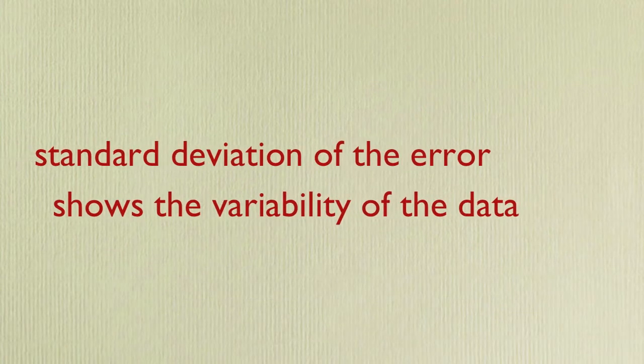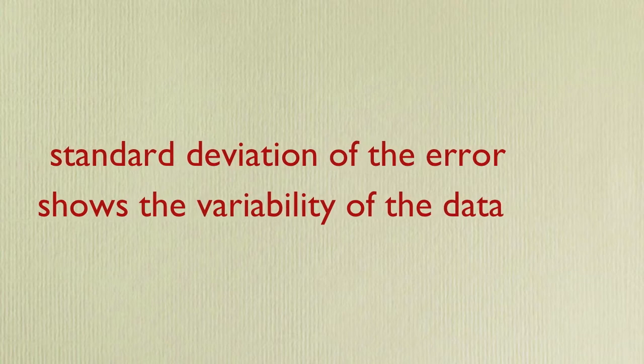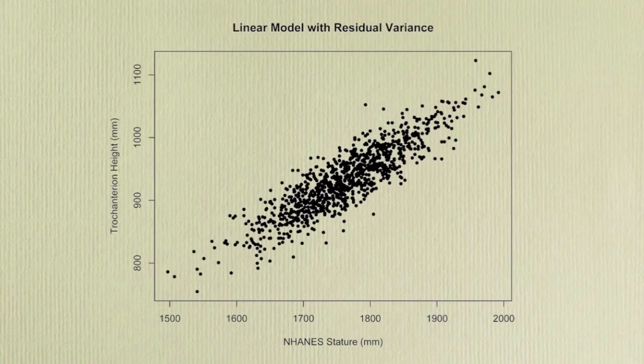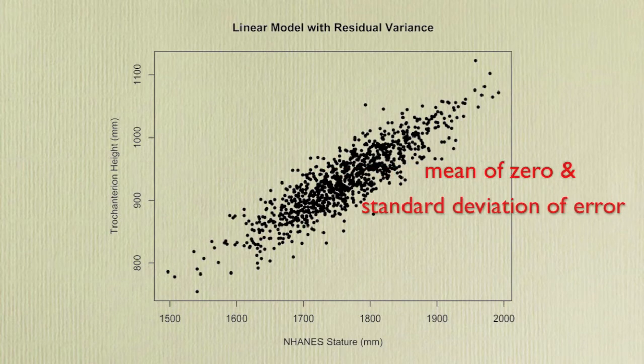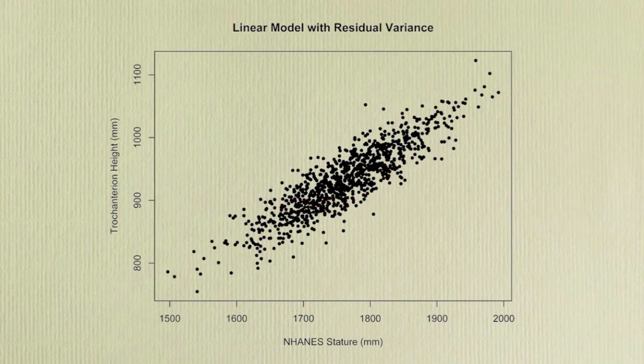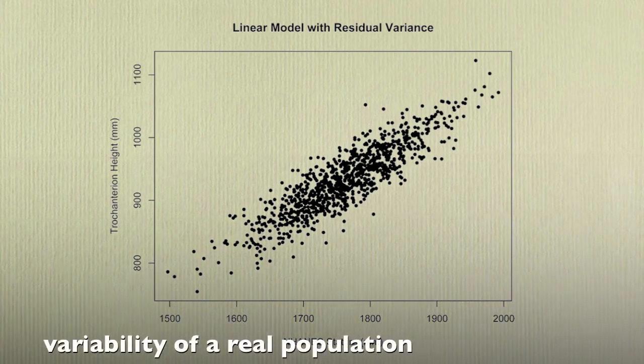The linear regression equation is created by finding a line such that the average error is zero. The standard deviation of the error shows the variability of the data. If there is a normal distribution of error, we can simply place this error randomly back into the regression equation to account for this variability. So, the linear model from ANSWER is adjusted to include a random term with a mean of zero and the standard deviation of the error. This residual variance term gives the synthesized anthropometry the variability of a real population.